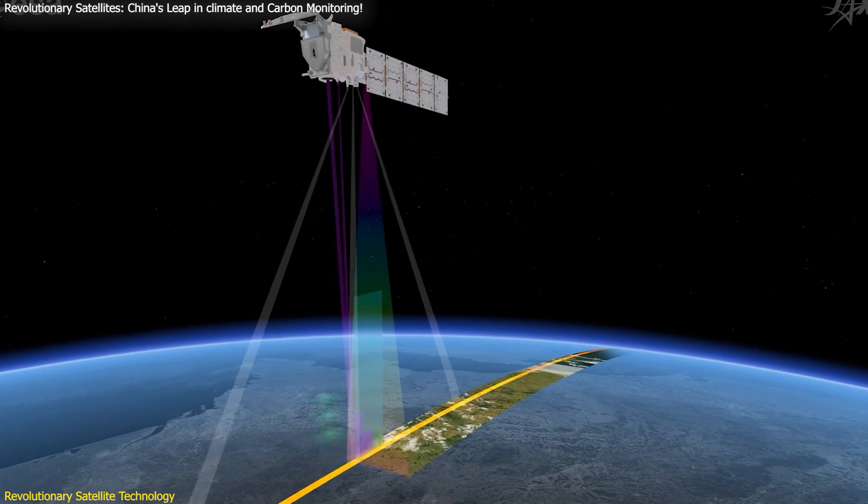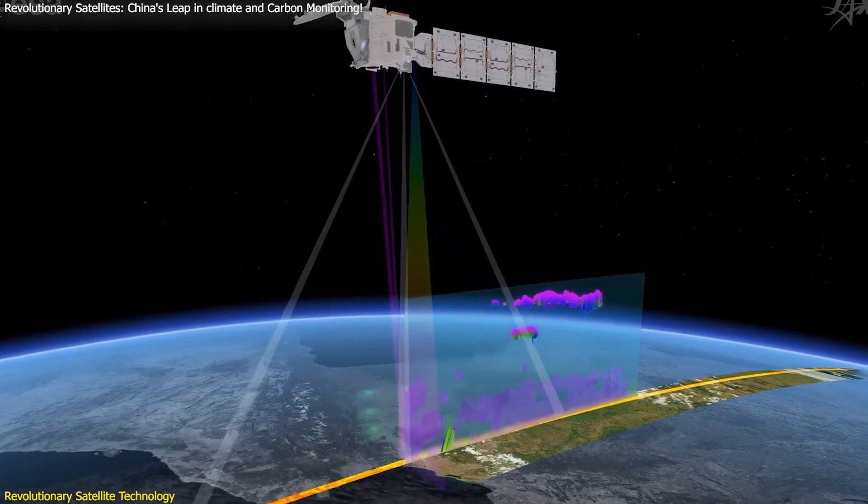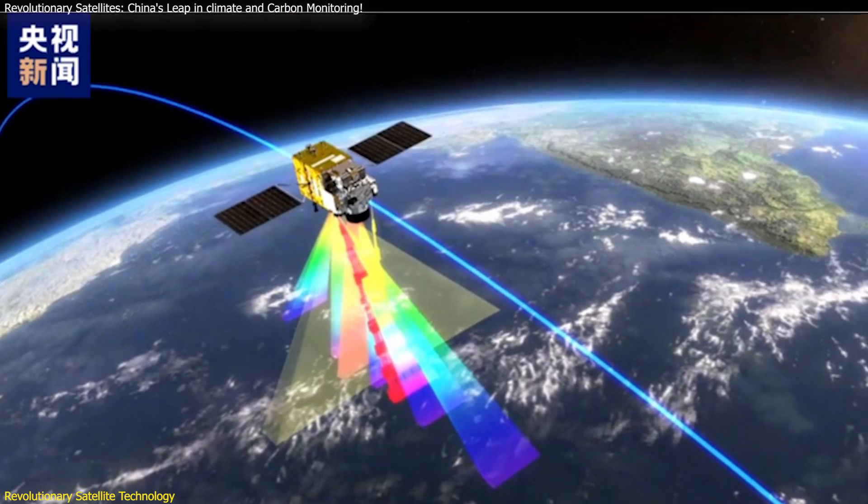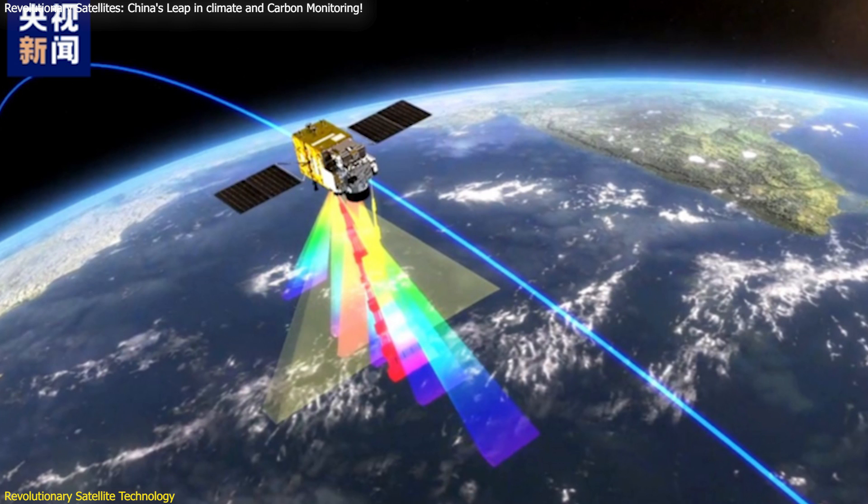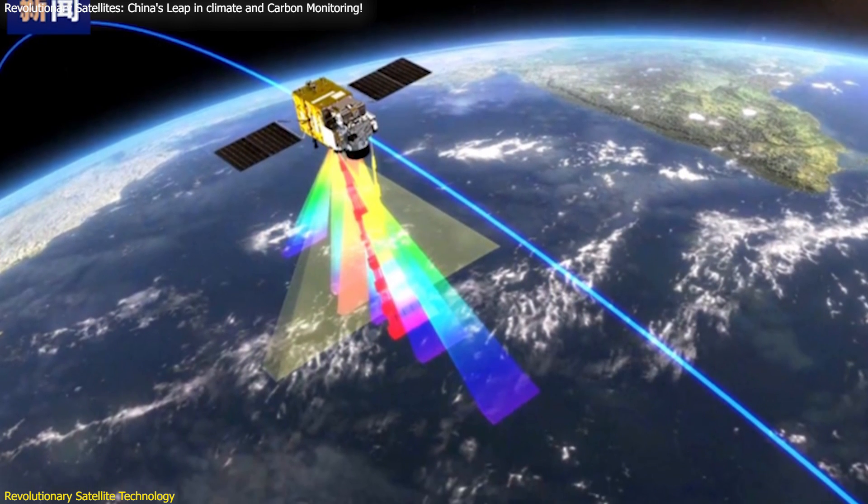The Terrestrial Ecosystem Carbon Monitoring Satellite, Gumong, combines both active and passive observation methods. CNSA reports that Gumong uses remote sensing techniques including laser, multi-angle, multispectral, hyperspectral, and polarization to detect vegetation biomass and productivity.